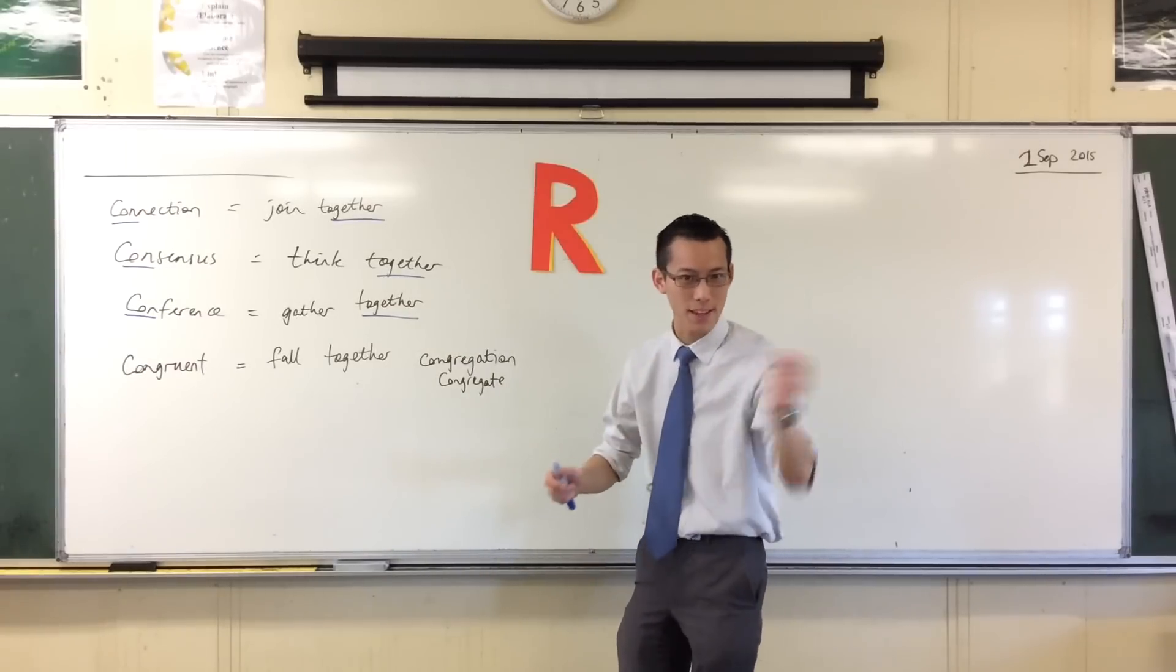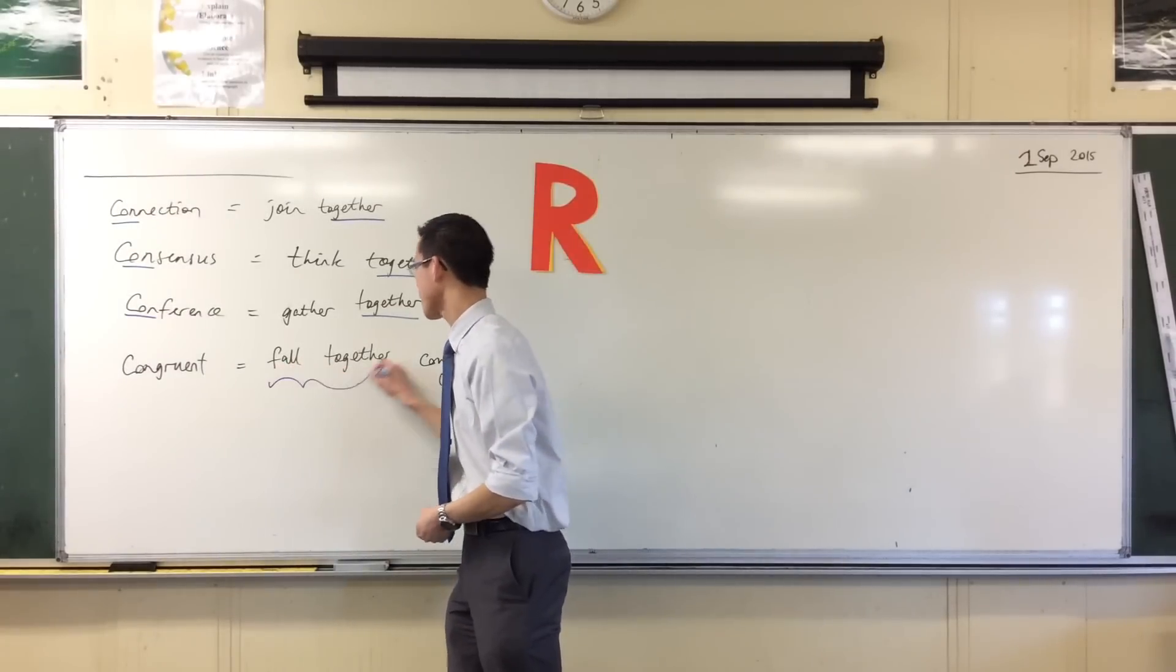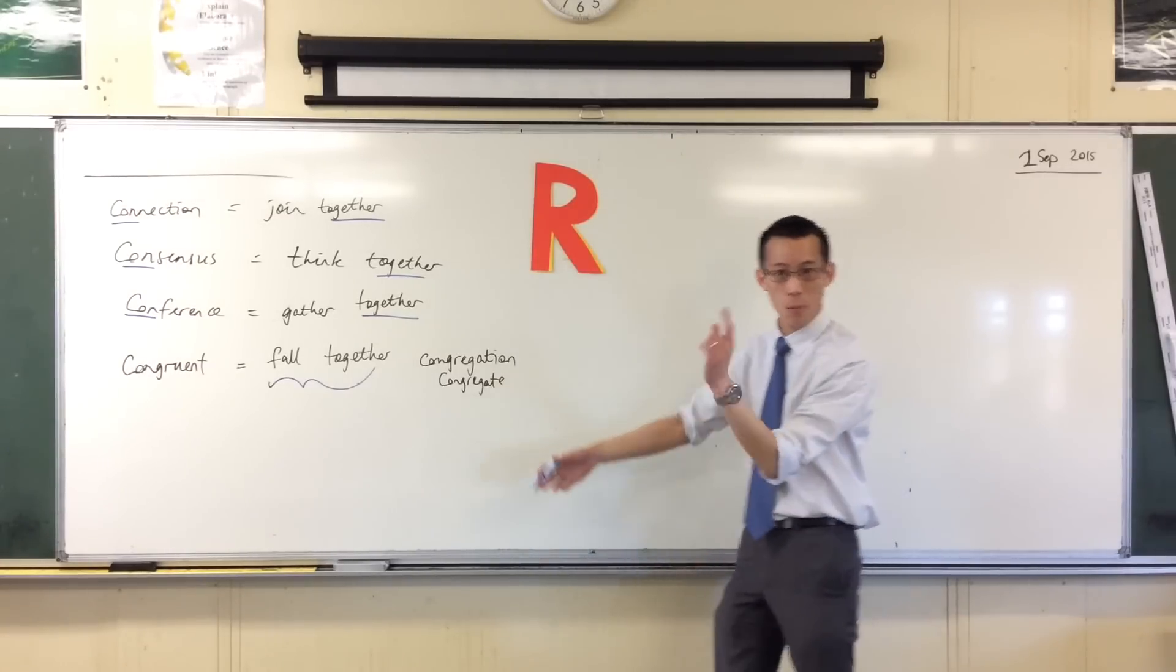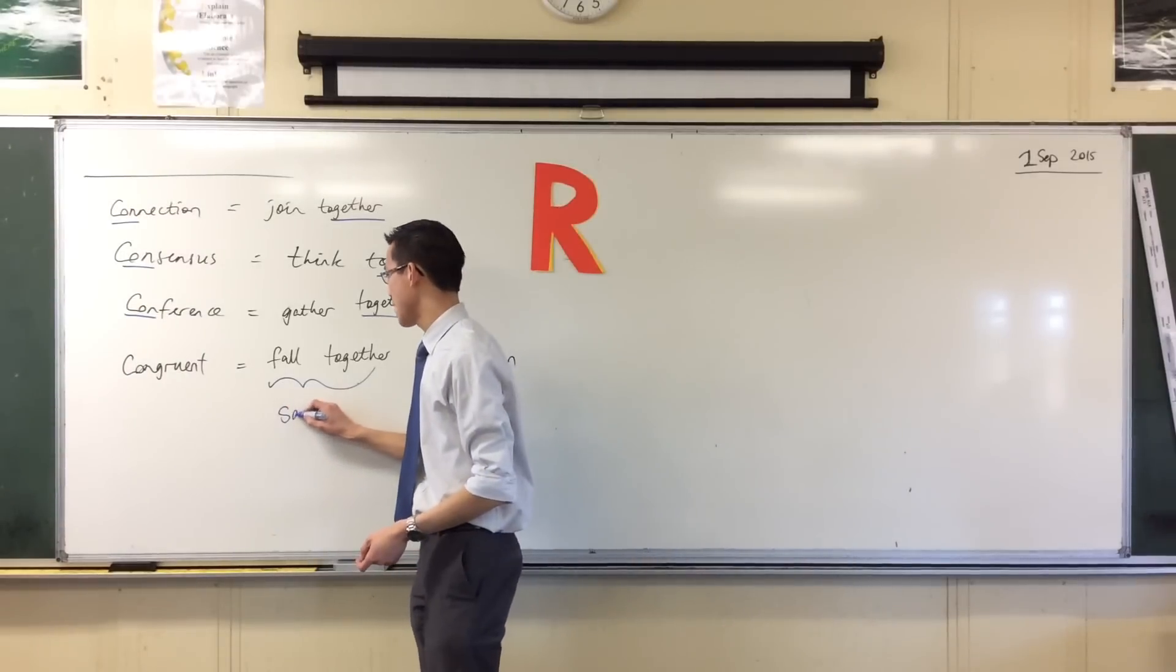Now when we're talking mathematics we mean a little more specifically, here is Nathan's idea: in order for two shapes, two figures to fall together, what we mean is they have to be the same size